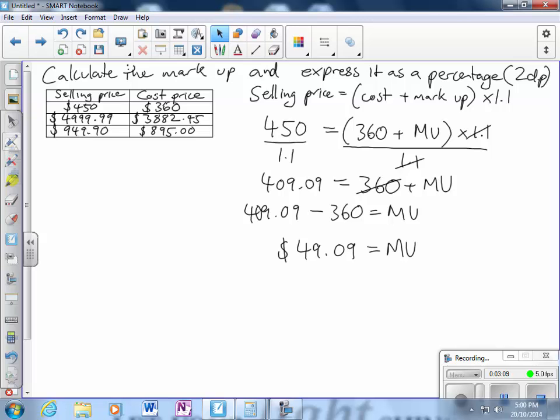Now I need to define this as a percentage of the cost of the item. So the cost price is $360. To find it as a percentage I do 49.09 divided by the cost price. So I should write that markup over cost, cost price of $360.